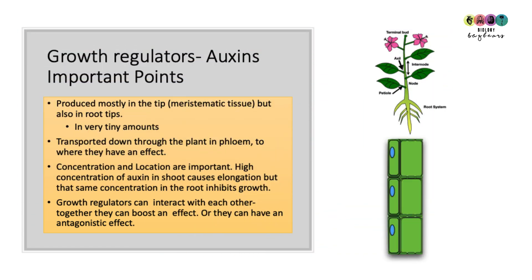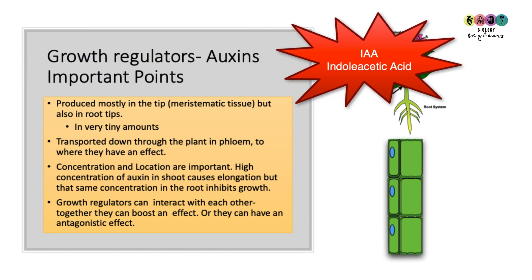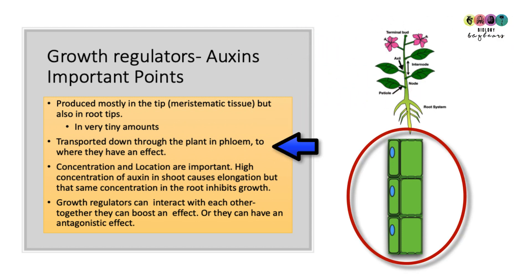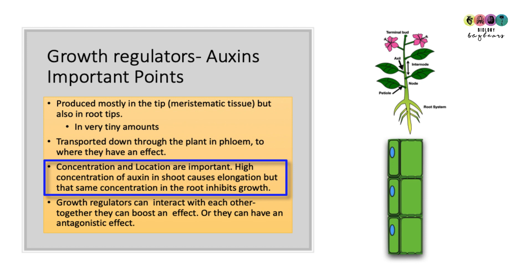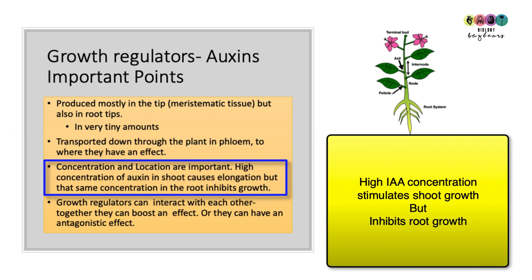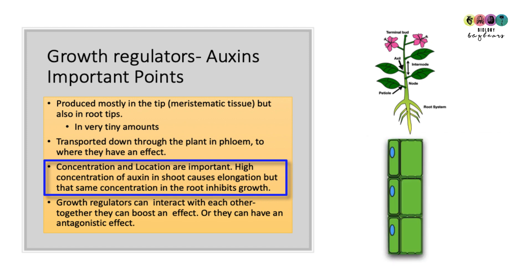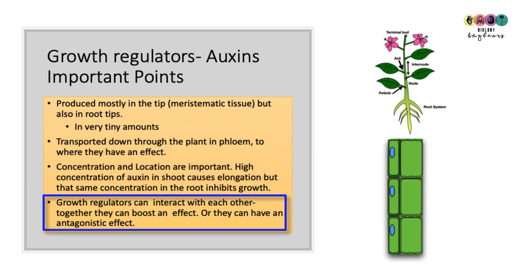Auxins, particularly IAA, are studied in great detail. IAA is produced in the apical meristems in very tiny amounts and transported downwards through the plant, thought to travel in the phloem. Concentration and location are really important: high concentrations of IAA in the shoot will cause the shoot to elongate, but the same concentration in the roots will inhibit growth. Very low concentrations of IAA in the roots stimulate root growth. Growth regulators can also interact — they can work together to boost an effect, or have an antagonistic effect where one stops the other from working.